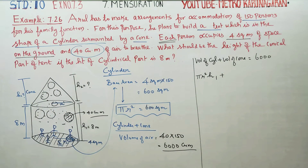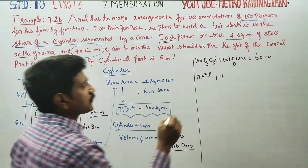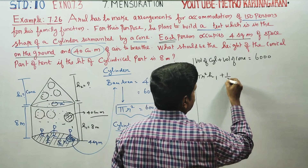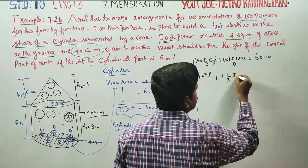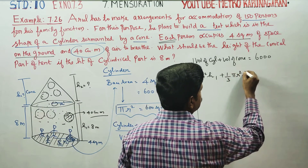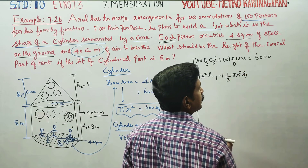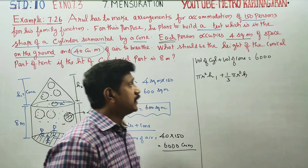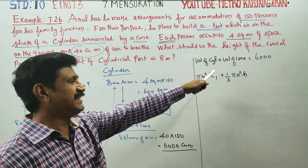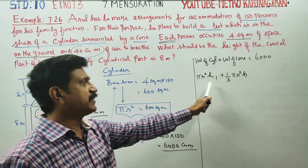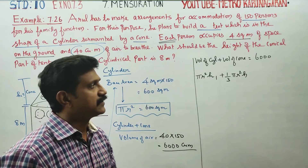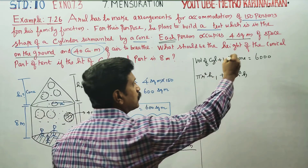The volume of the cone formula is one-third pi r squared h. Volume of the cylinder plus volume of the cone, using the formula one-third pi r squared h for the cone.